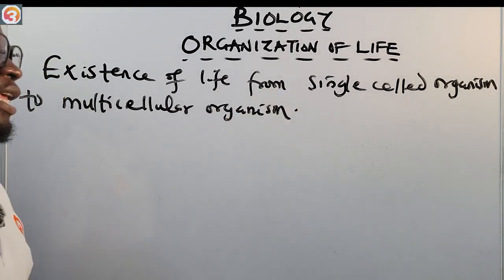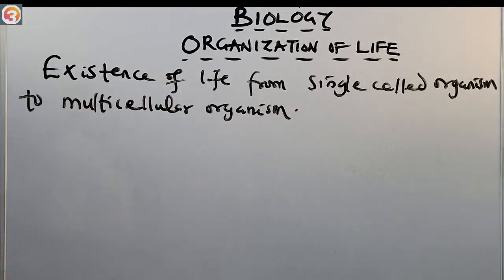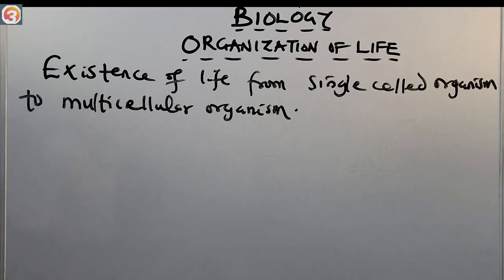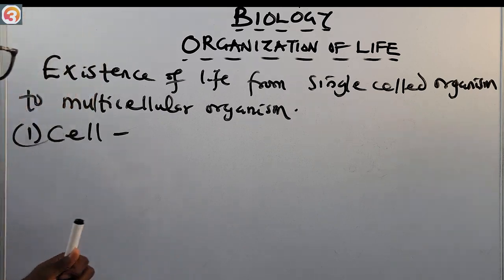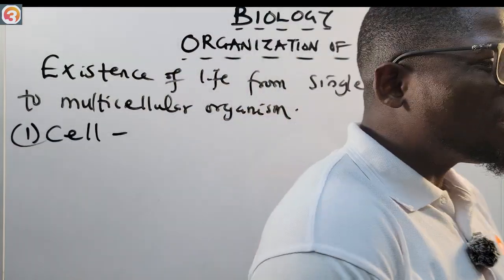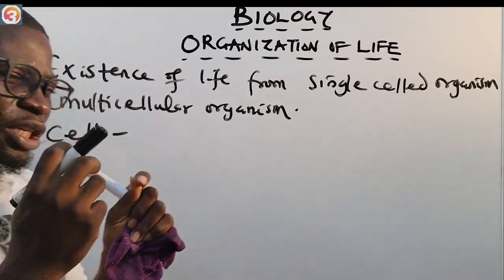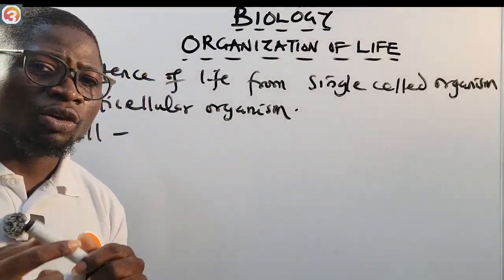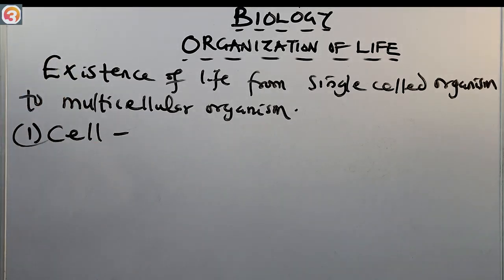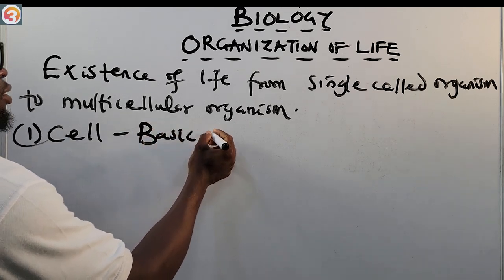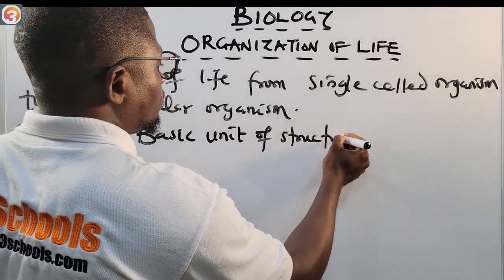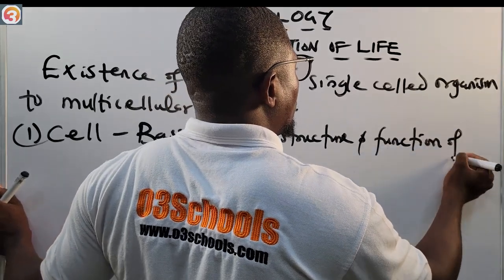Now let's look at the levels of organization. The very first one is the cell. The cell is the most basic unit of life — a small self-contained unit of a whole organism. It is the basic unit of structure and function of all living things, both plants and animals.